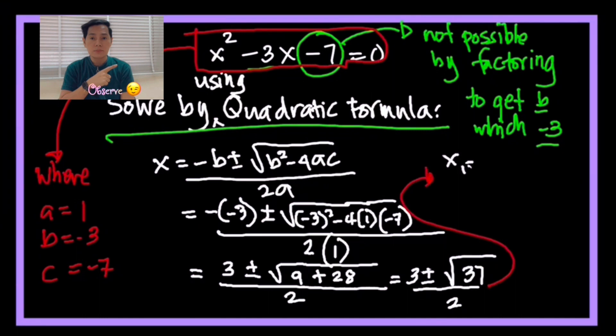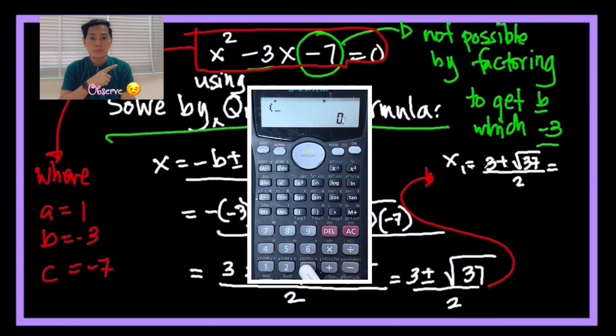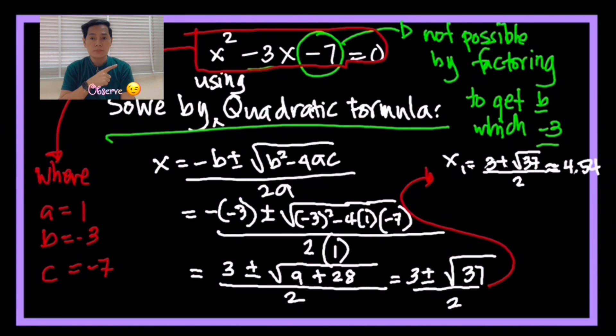You have there x₁. There are two solutions here, the positive and the negative. So 3 plus the root of 37 over 2. I'm going to show you here in the calculator how we are going to plug in these values. First, put the open parenthesis, then 3 plus the root of 37, and then we close it because we need to solve the numerator first divided by 2. And the value of x is 4.54 in two decimal places. That's how you work on that in the calculator.